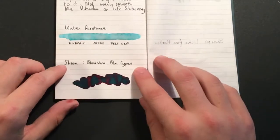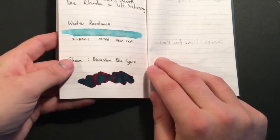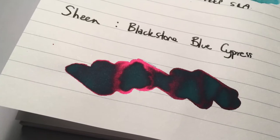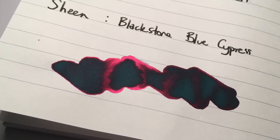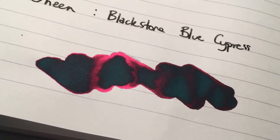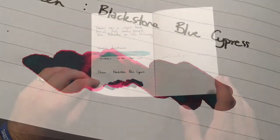Now for sheen, I chose Blackstone Blue Cypress today, and you can really see that ink sheens. That's a high sheening ink, but on this paper, once again not super absorbent, so it did sheen really nicely.